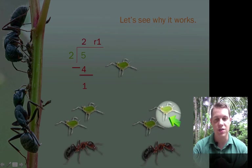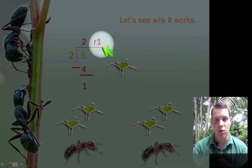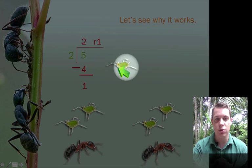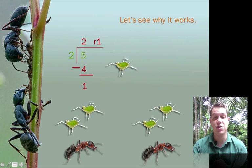The 4 represents how many aphids are protected by ants. 1, 2, 3, 4 aphids are protected. The 1, which we rewrite up here, remainder 1, is our poor little aphid that has no protection from predators or isn't protected by the ants. He's the remainder.